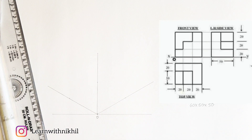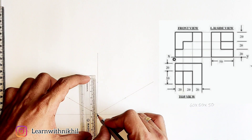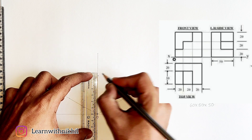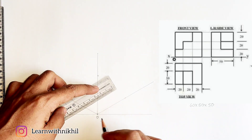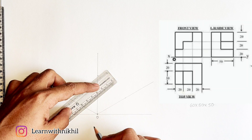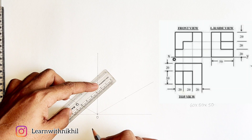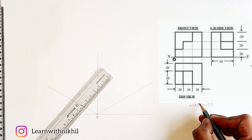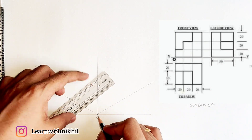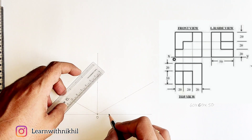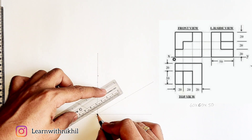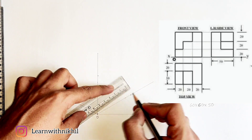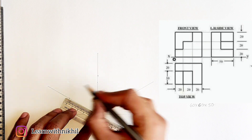As mentioned earlier, the front view will be on the right side. So first we will mark the height, which is 60. The width is also 60 — that is 20 plus 20 plus 20 (earlier I had written 50, but it is 60). So the width of the front view is also 60. I am marking a point at a distance of 60 millimeters, and the depth we have already calculated, which is 50.